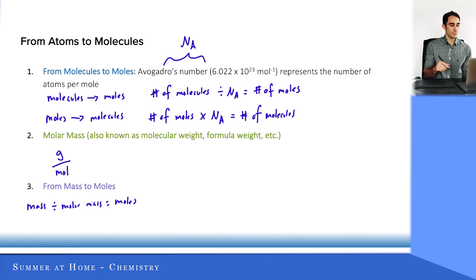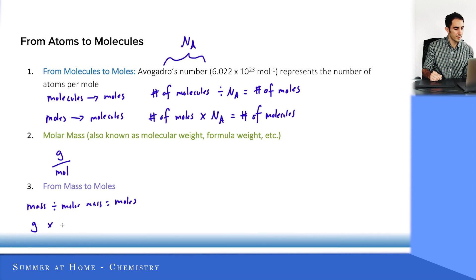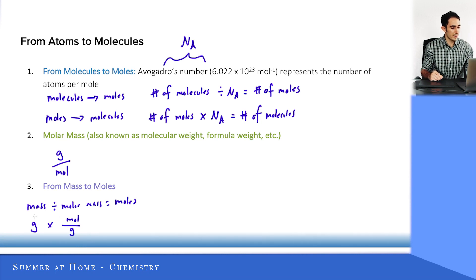If I wanted to go from mass to moles, I could use that molecular weight or molar mass. That looks like: mass divided by the molar mass equals the moles. I like to write it out in units: grams multiplied by the inverse of the molar mass — so moles per gram — and this way I show how these units cancel out, leaving just the moles.